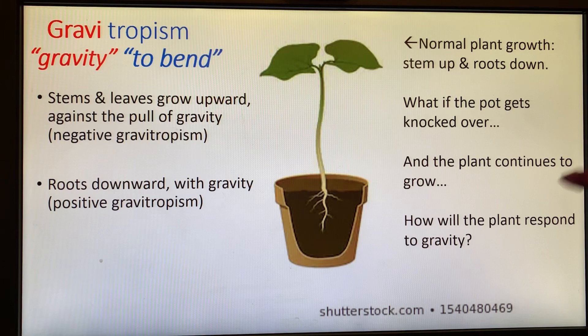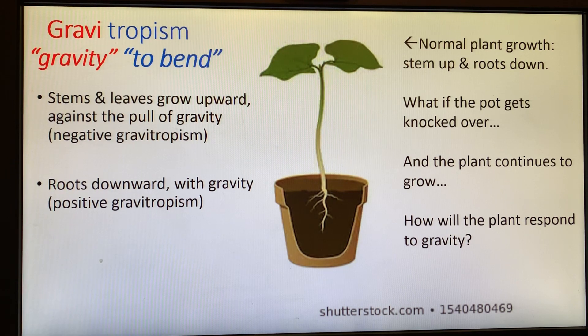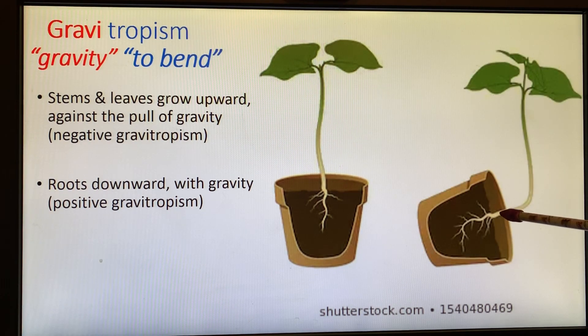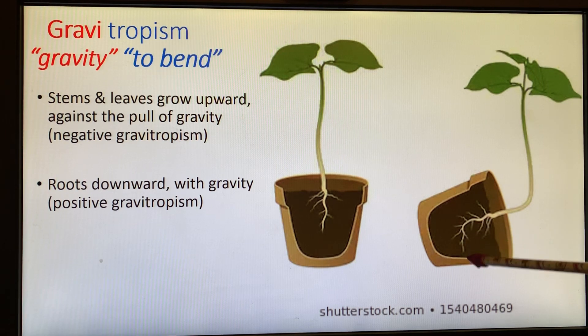However, what happens if the plant gets knocked over and the plant continues to grow? How does it respond to gravity? Well, interestingly enough, the stem will bend so that the rest of the plant is growing upright. And the roots, interestingly enough, will start growing down. The new growth on those roots will go downward. So it's responding to gravity. A negative gravitropism because it's going against gravity and a positive gravitropism because it's going with gravity.